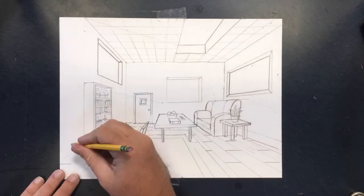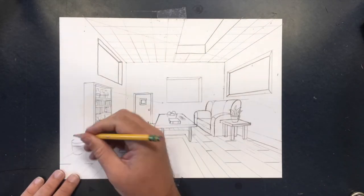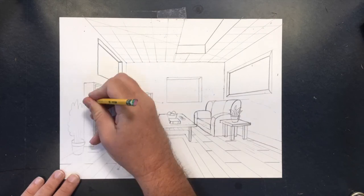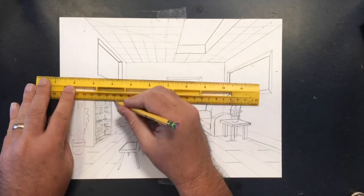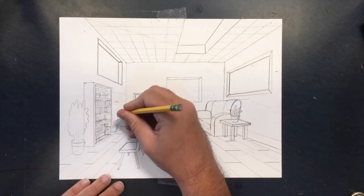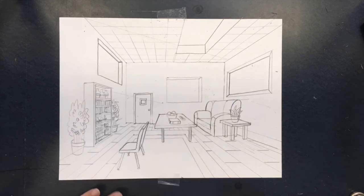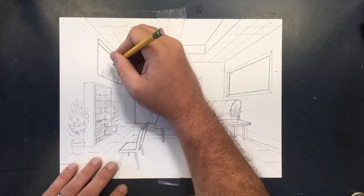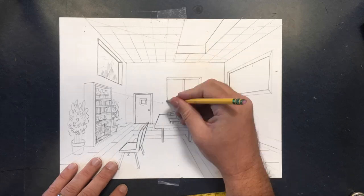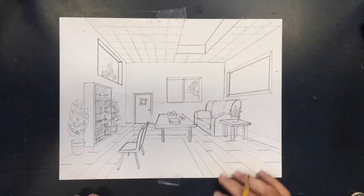And when you draw organic shapes, you don't need a vanishing point to help you draw the shape, but you will need the vanishing point to help you see how small the shape gets as it moves further back in space. So I did this one plant up close, and then I used the vanishing point to help me draw a matching plant on the other side of the bookcase, and I'll do the same thing for these trees outside the window.